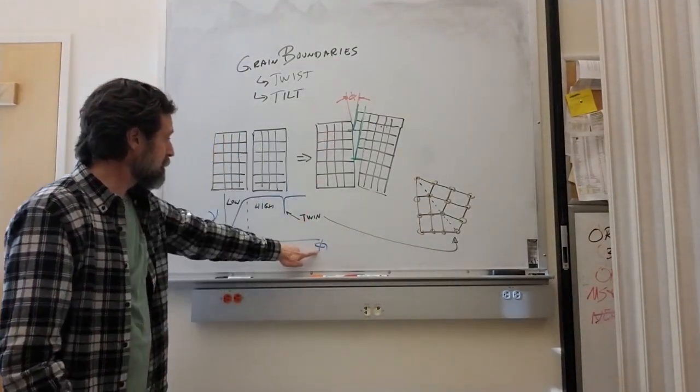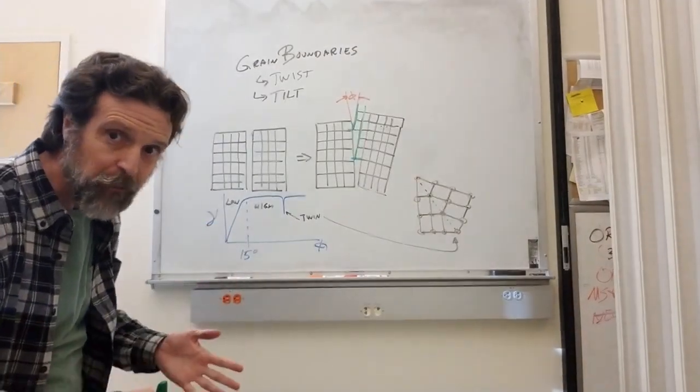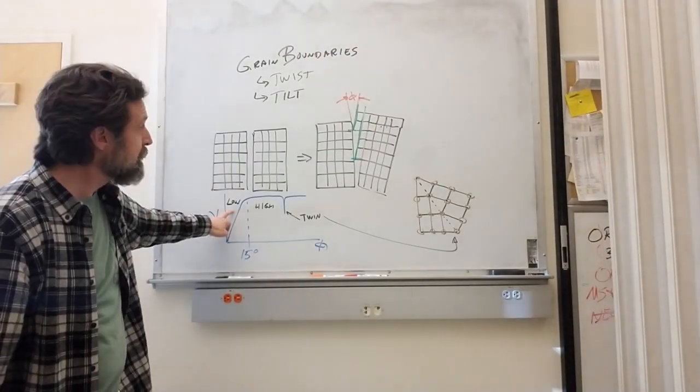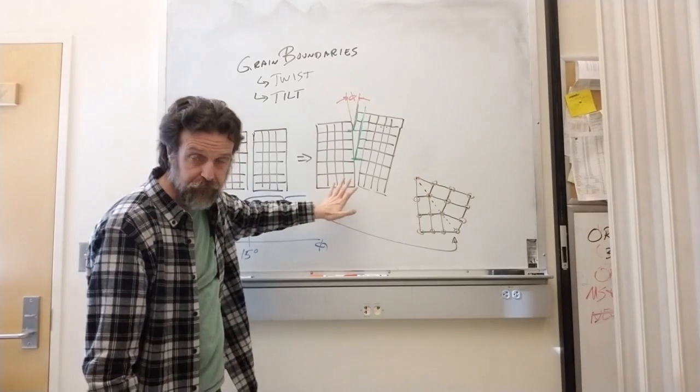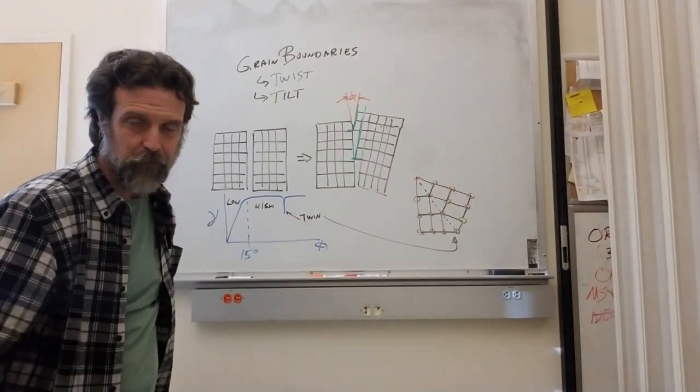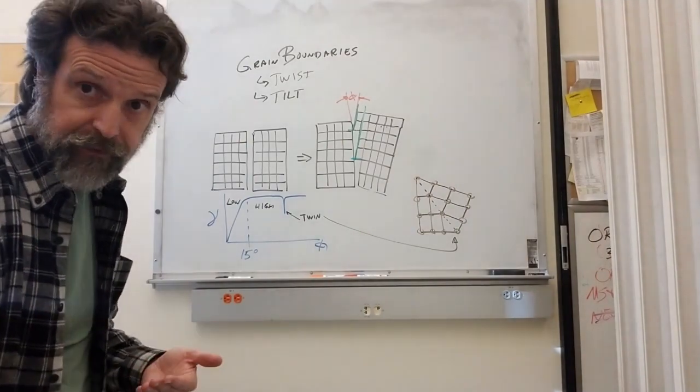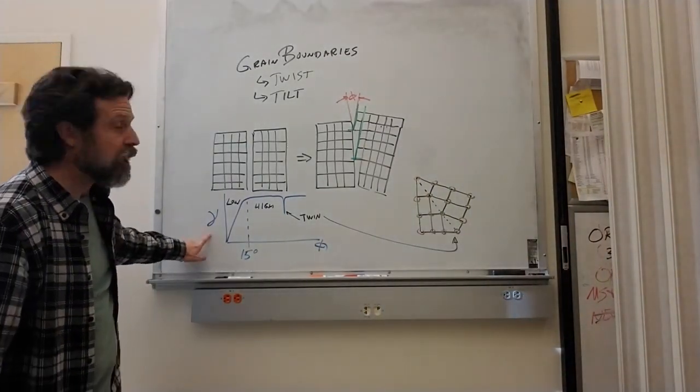When the angle is relatively low, less than between 15 and 20 degrees, we call it a low angle grain boundary. We imagine it as a series of dislocations because it is, and we can talk about it and its elastic properties in terms of dislocations and energy.